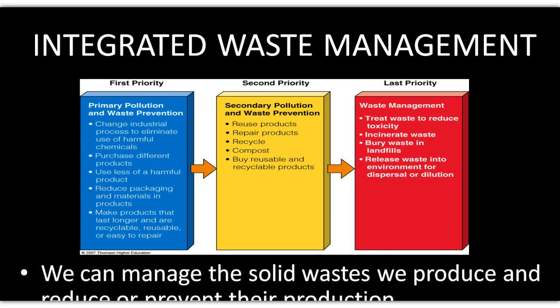A better approach than the simple three R's is a priority hierarchy. The first priority is to change the process so you're not producing the waste in the first place — refuse it. The secondary priority gets into the three R's: recycle, reduce, reuse. The last priority is: now that I've created this material, how do I get rid of it? But you really want to stay in the first or second priority.